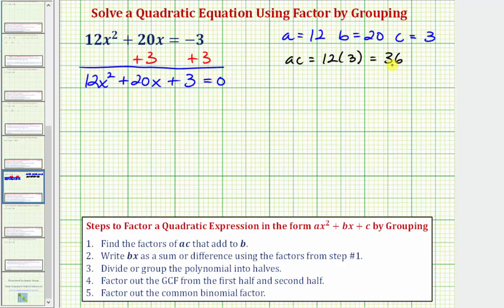Which would be 1 times 36, 2 times 18, 3 times 12, 4 times 9, and 6 times 6. So we're looking for the factors that have a sum of 20. Notice how those factors would be positive 2 and positive 18. Positive 2 and positive 18 multiplying give us positive 36, and 2 plus 18 is equal to 20, which equals b.